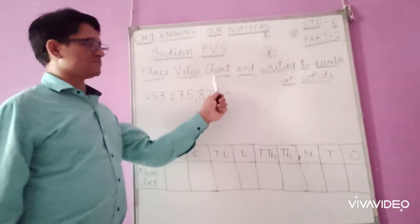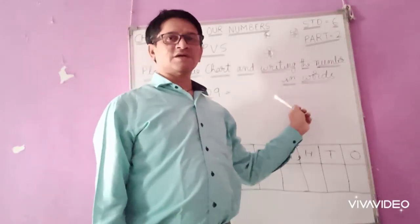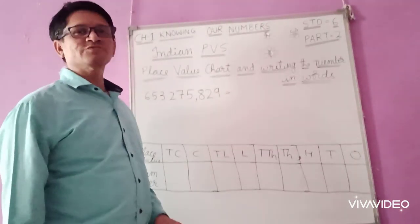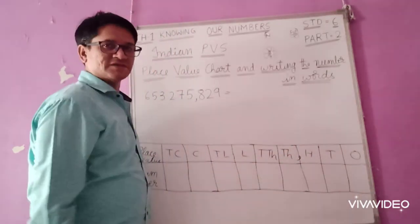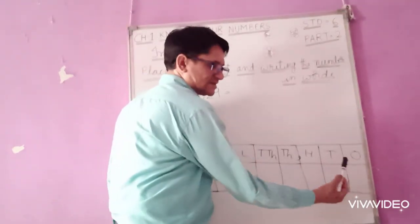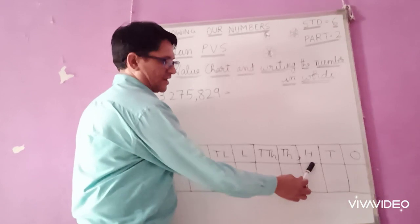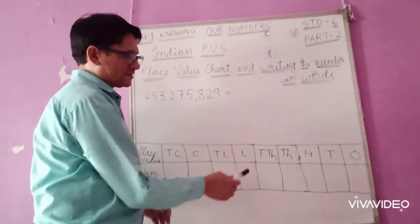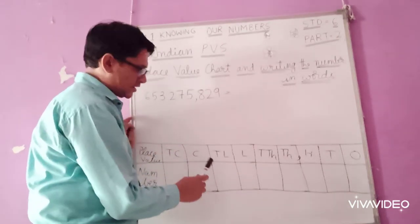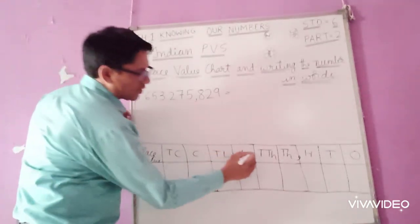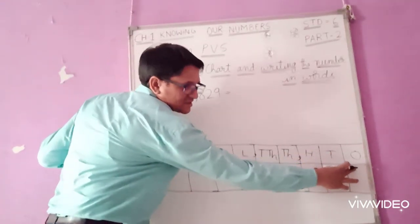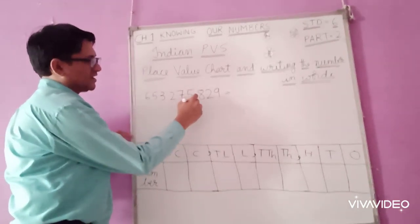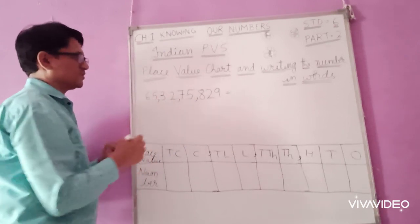Now, the place value system chart and writing the number in words. Let us look at the place value chart. The first place is ones, second is tens, then hundreds, thousands, ten thousands, lakh, ten lakh, crore, ten crore. In the Indian system, the comma comes after the first three digits, then again after every two digits — so two digits, two digits.